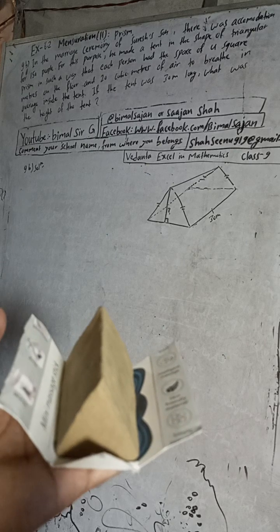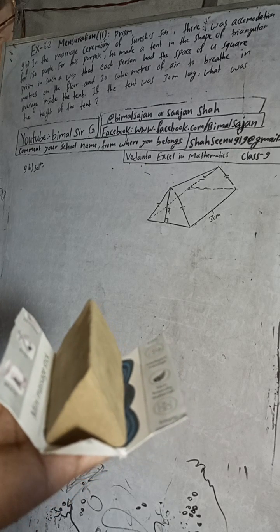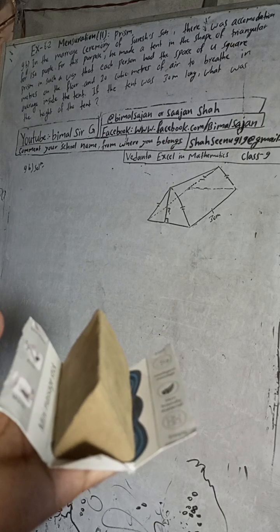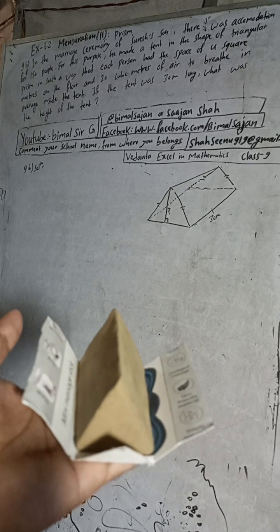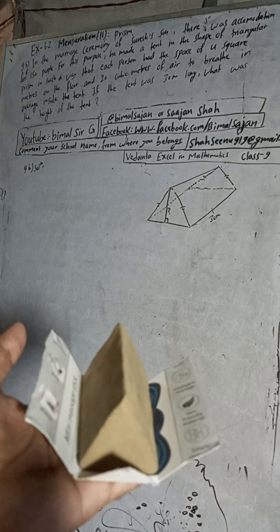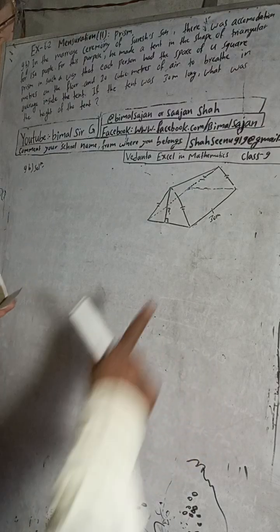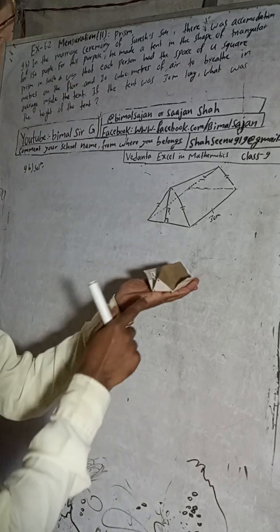In such a way that each person had the space of 4 square meters on the floor and 20 cubic meters of air to breathe on average inside the tent. If the tent was 30 meters long, what was the height of the tent?